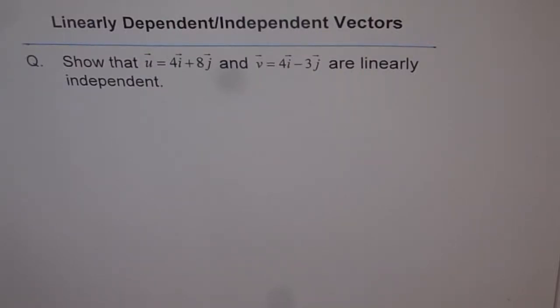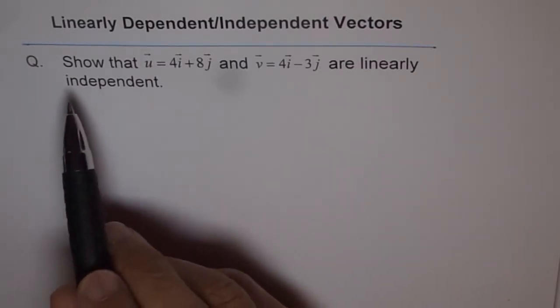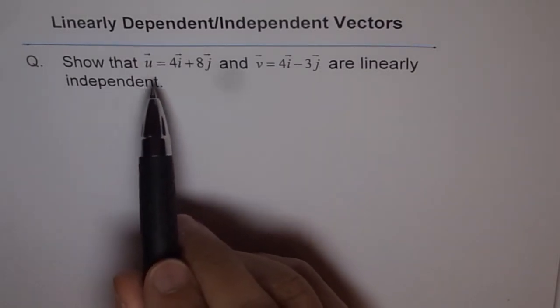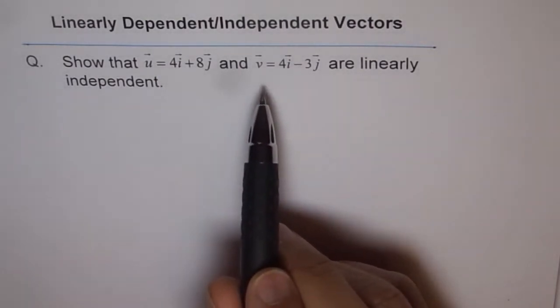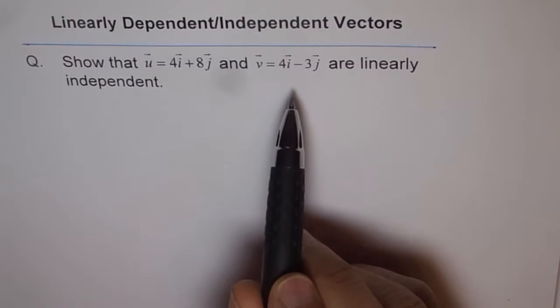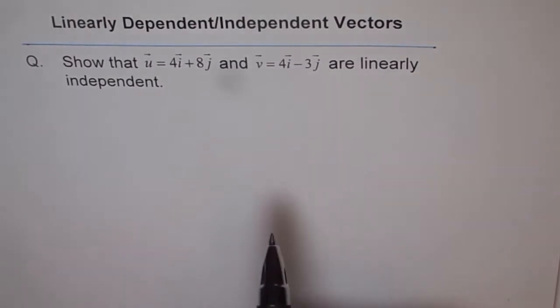Linearly dependent or independent vectors. Here we have a question which says show that u equals 4i plus 8j and v equals 4i minus 3j are linearly independent. Now this means that we can...